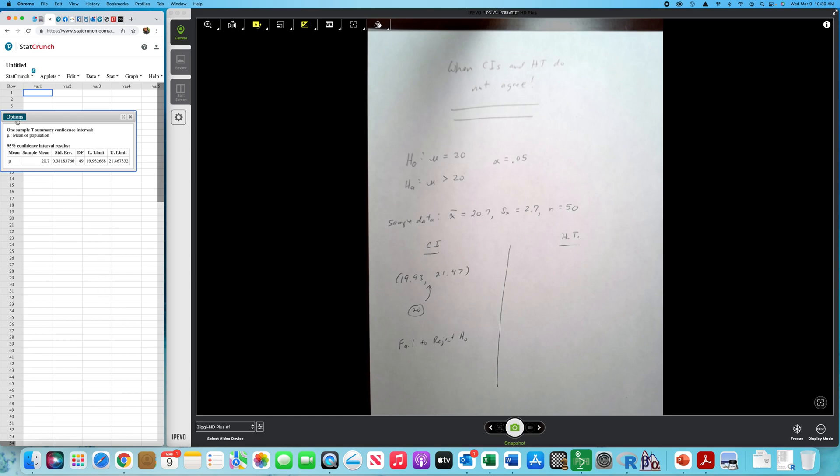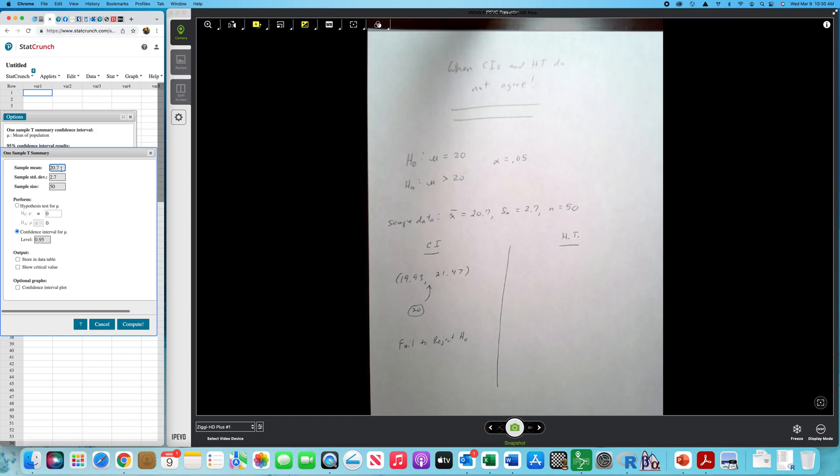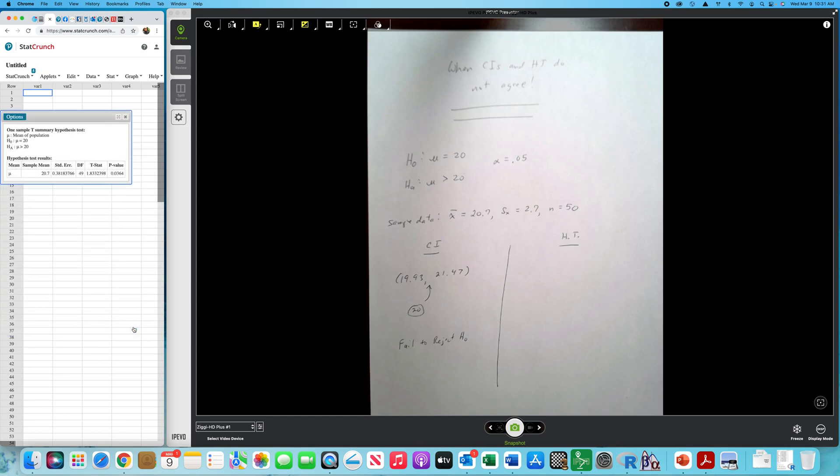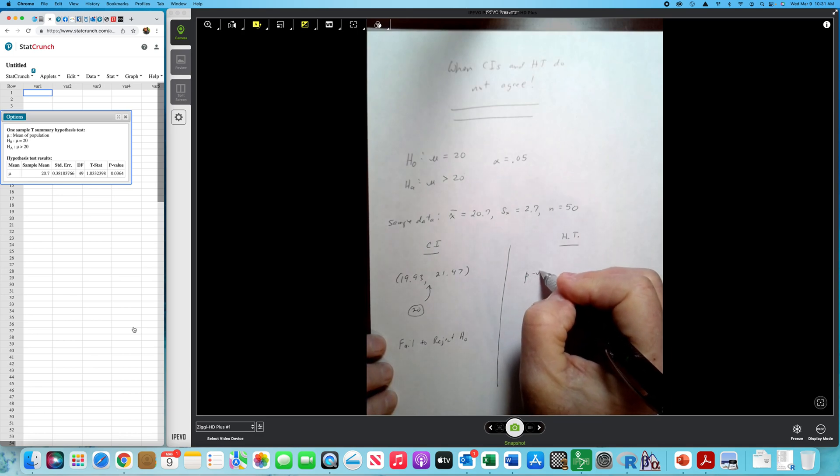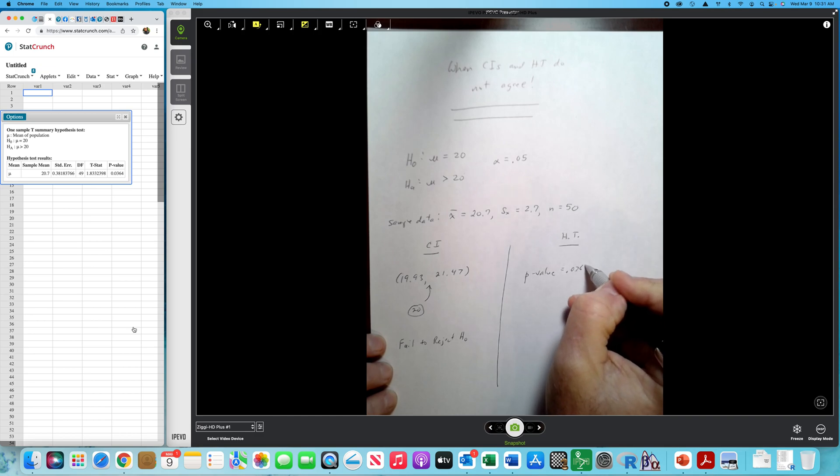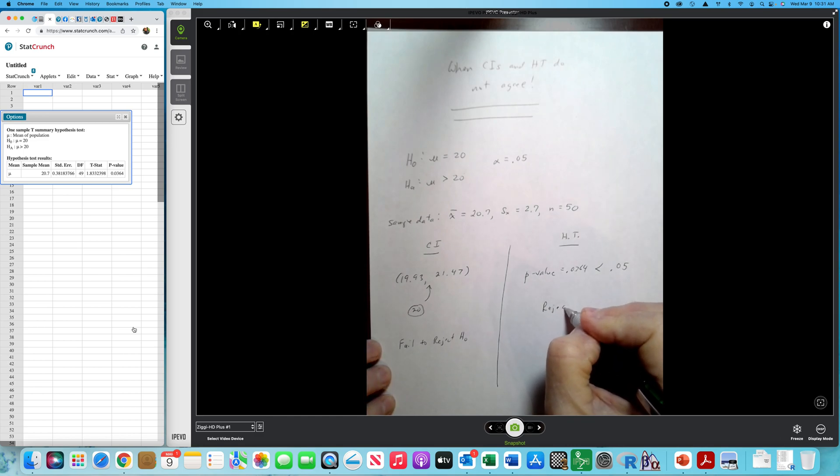Now, if we do the same calculations with the same data, but we run a test of hypothesis for a value of 20, but we run a one-tail test greater than 20. And let's see what we get. Well, we get a p-value of 0.0364, which is less than our stated alpha value of 0.05. So that leads us to reject the null hypothesis. So again, conflicting results with the confidence interval and a test of hypothesis.